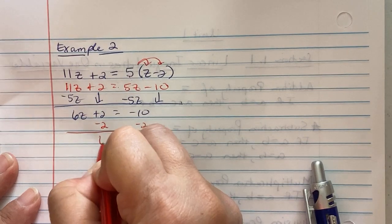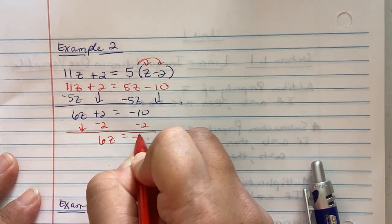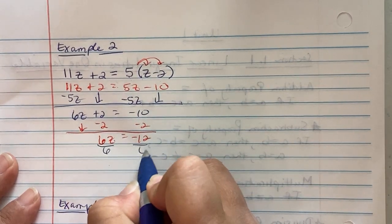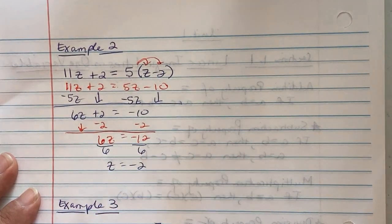So we get 6z equaling negative 12. Divide both sides by 6, so z is equal to negative 2.